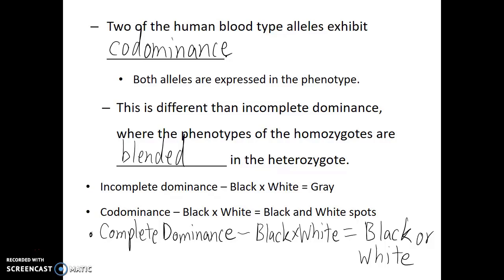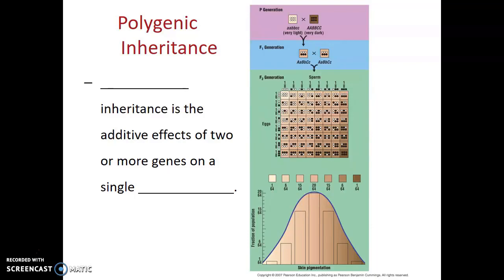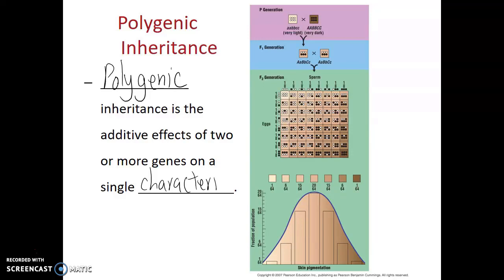Another complication that Gregor Mendel did not see is when a single trait or characteristic is controlled by more than one gene. We call this polygenic inheritance — the additive effects of two or more genes on a single characteristic. An example in humans is the default level of skin pigmentation. This is not just controlled by a single gene and doesn't just follow complete dominance. Instead, we're dealing with three different genes, each operating in an incompletely dominant manner, with a more pigmented allele and a less pigmented allele. So when we look at possible combinations of skin color, there aren't just one or two options — we're looking at a gradient, a range of possible options.